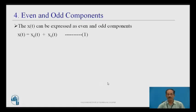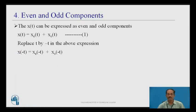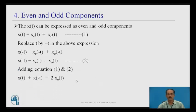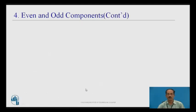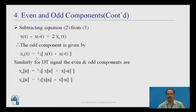Even and odd components: x(t) can be expressed as x(t) = xₑ(t) + xₒ(t) (equation 1). Replacing t by -t: x(-t) = xₑ(-t) + xₒ(-t) = xₑ(t) - xₒ(t) (equation 2), since xₑ is even and xₒ is odd. Adding equations 1 and 2: x(t) + x(-t) = 2xₑ(t). Therefore, the even component is xₑ(t) = ½[x(t) + x(-t)]. Subtracting equation 2 from 1: x(t) - x(-t) = 2xₒ(t), so the odd component is xₒ(t) = ½[x(t) - x(-t)].